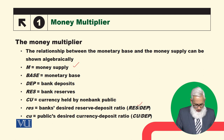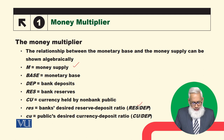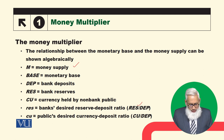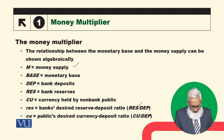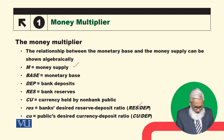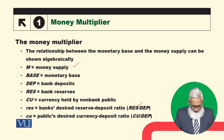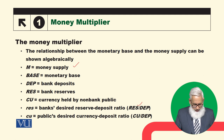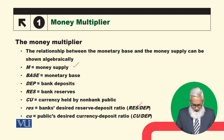In small letters, res is the Bank's Desired Reserve-Deposit Ratio — that is, bank reserves divided by bank deposits. And small c.u. is the notation we are using for the Public's Desired Currency-Deposit Ratio — currency divided by bank deposits.